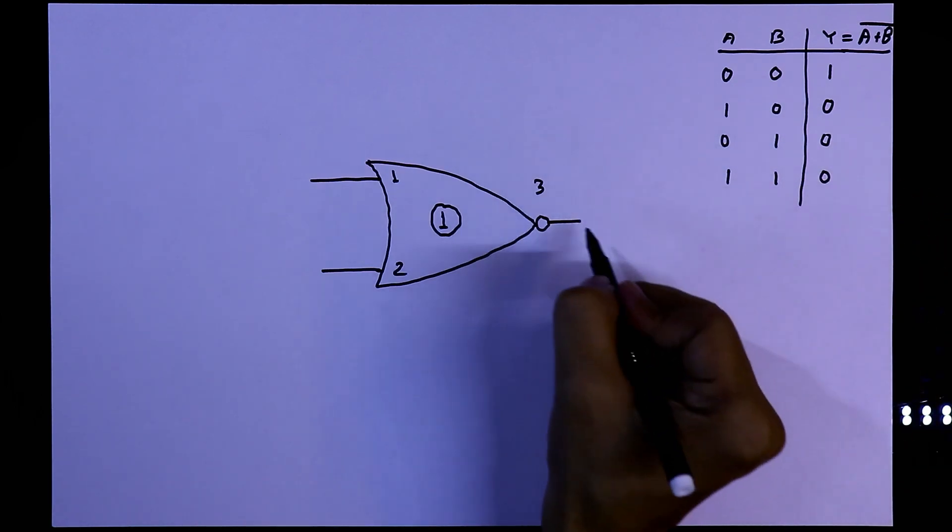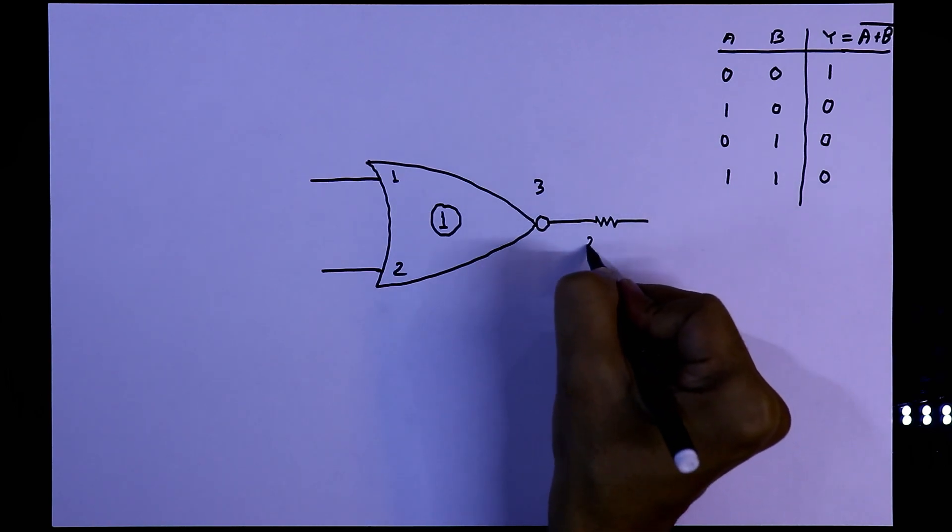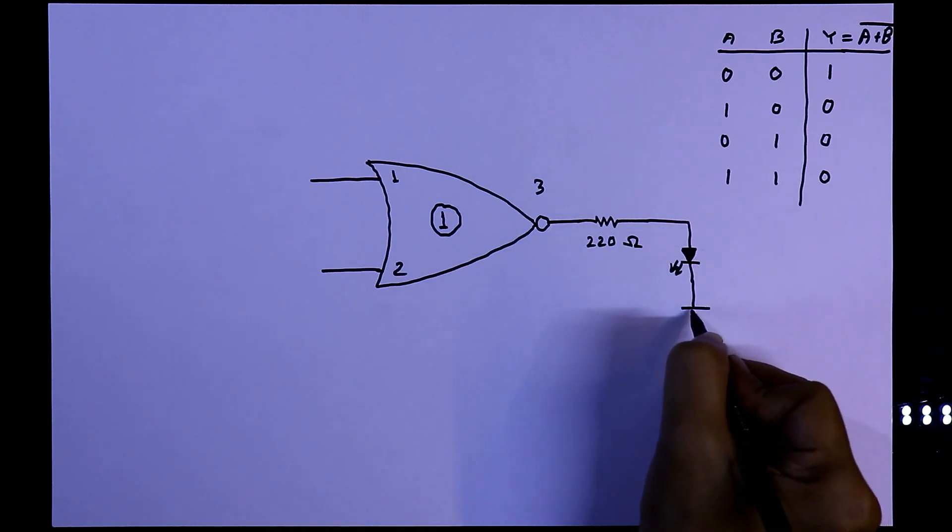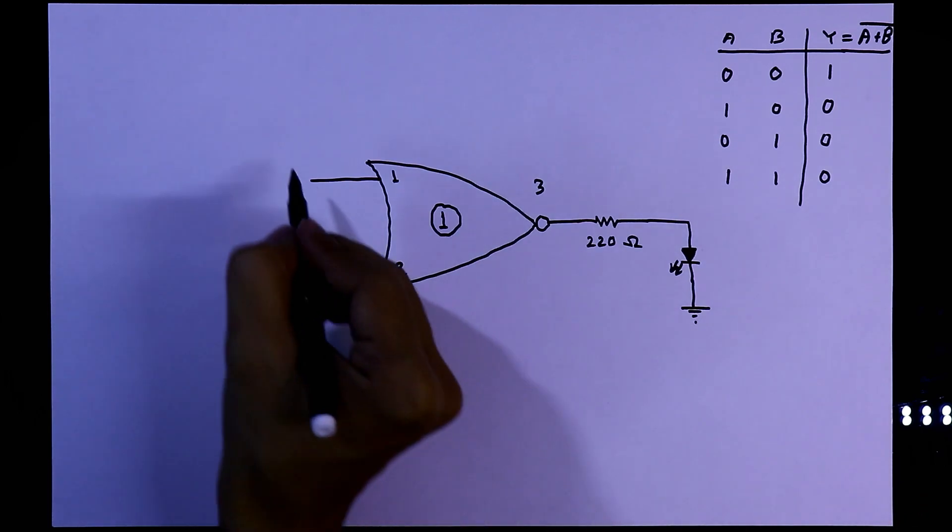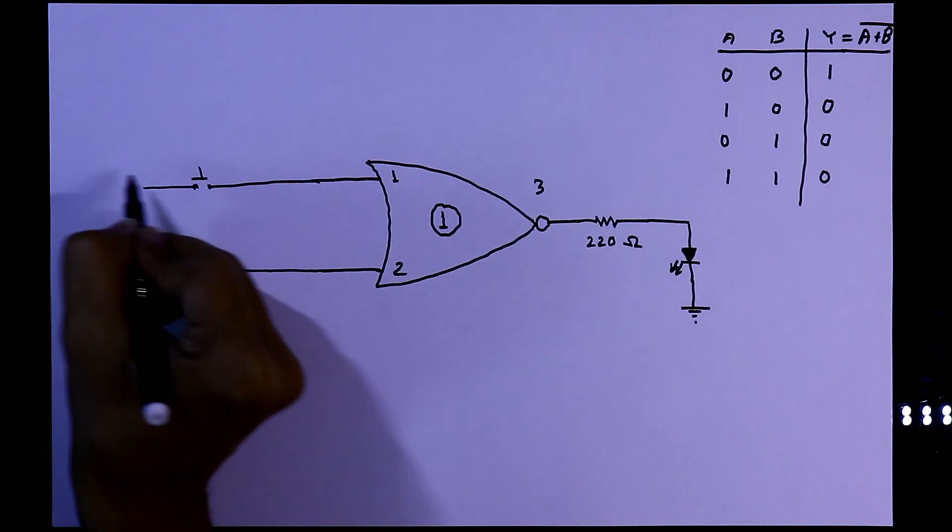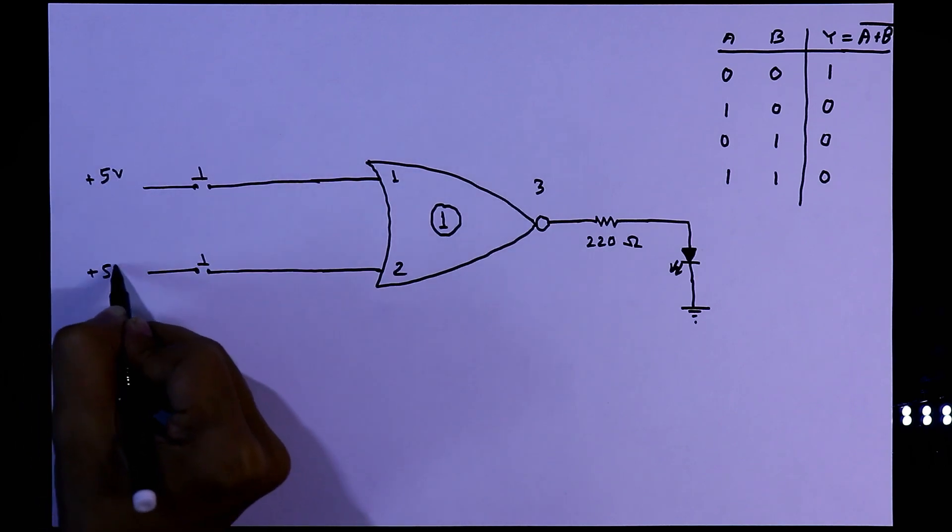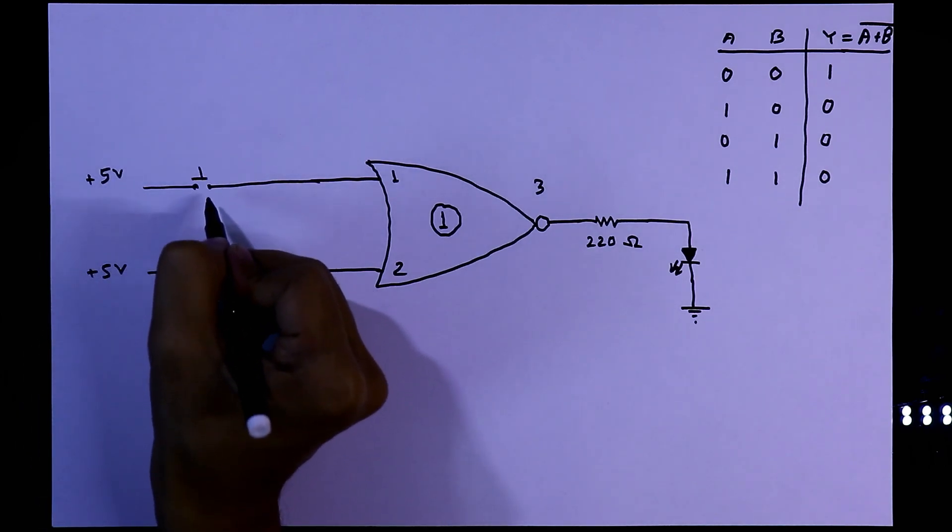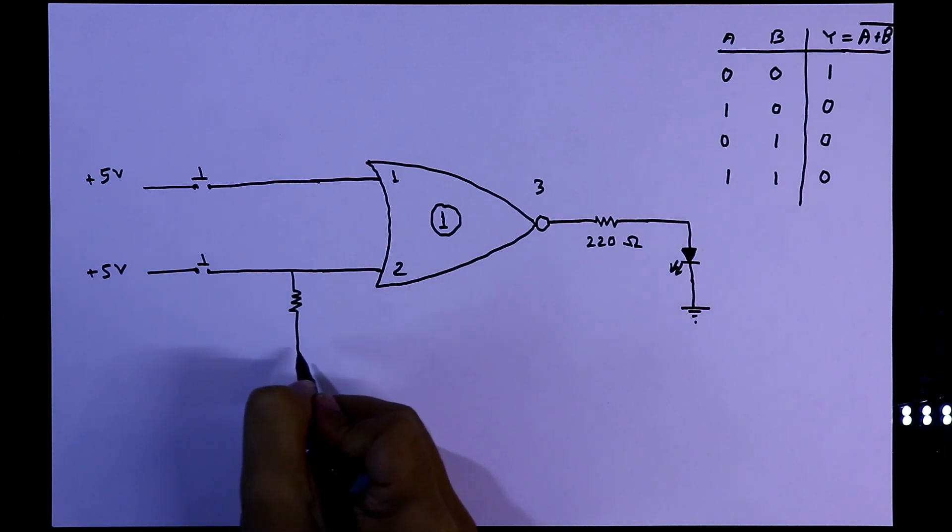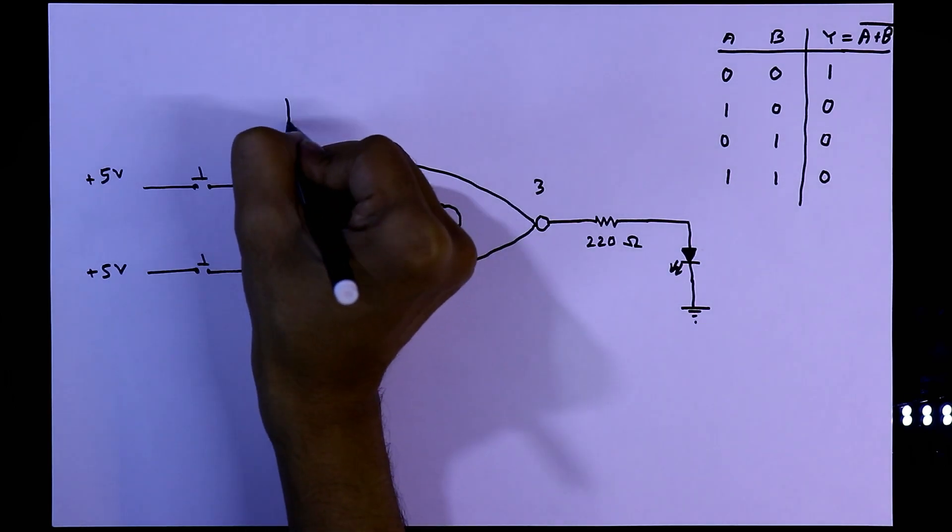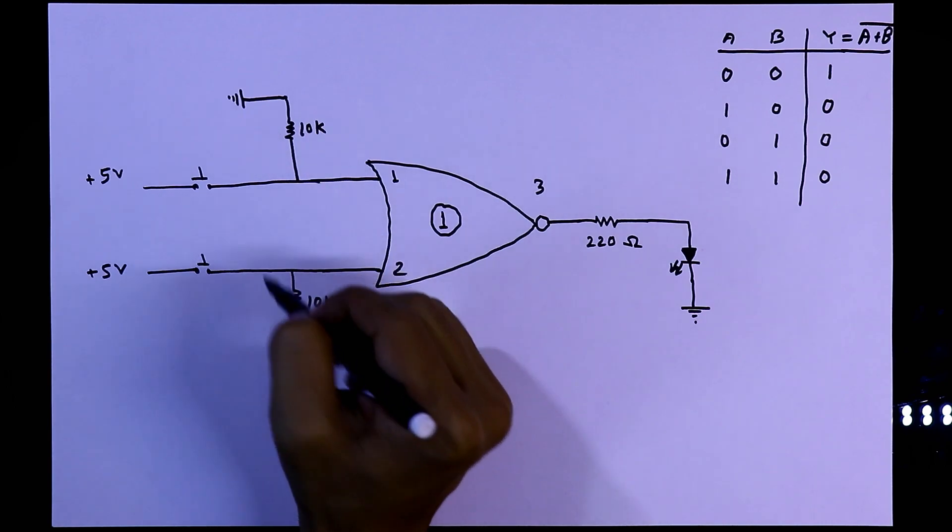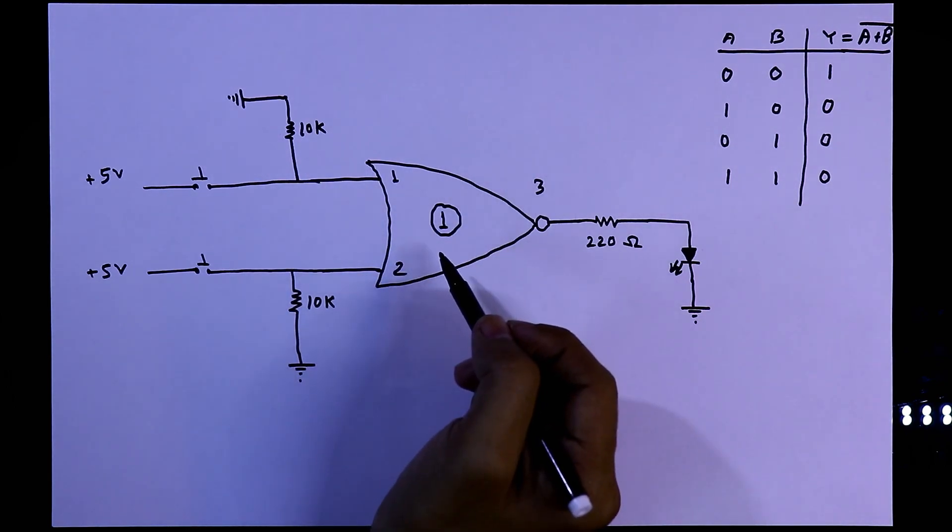So to see the output we will connect a resistor with the output and the value is 220 ohms, and with this we will connect an LED and the cathode pin of the LED will be connected to the ground. To provide inputs we will connect a push button switch with both of the input and in this point we will connect plus 5 volts. So whenever the switch is turned on then it will get input. And also we have to connect pull-down resistor. These resistors are compulsory and the value will be 10 kilo ohms. And I already explained why should we use the pull-down resistor with the logic IC, link in the description below.